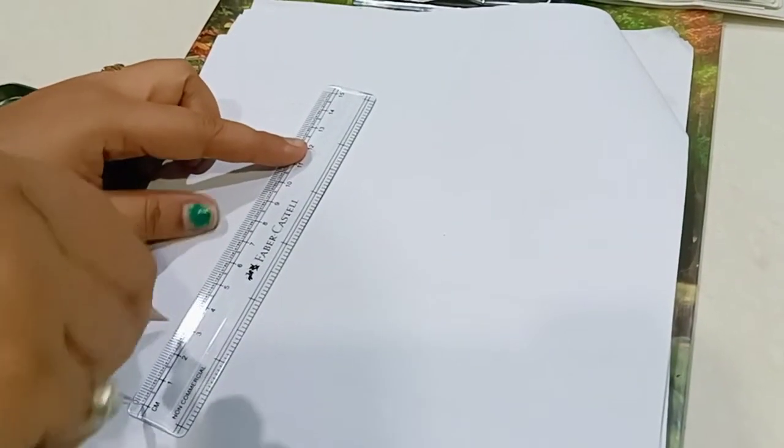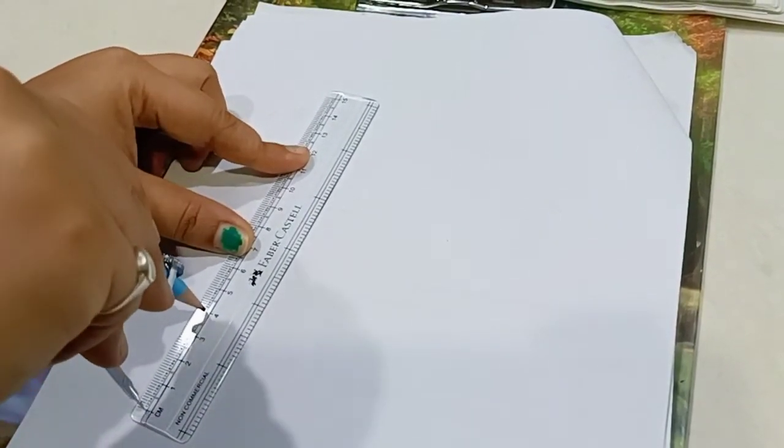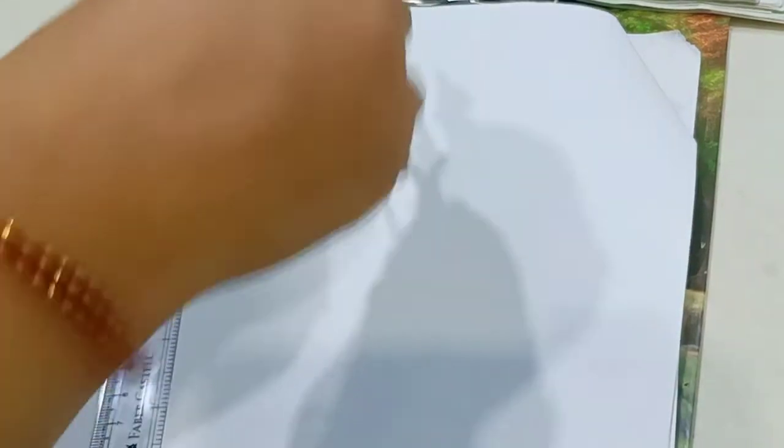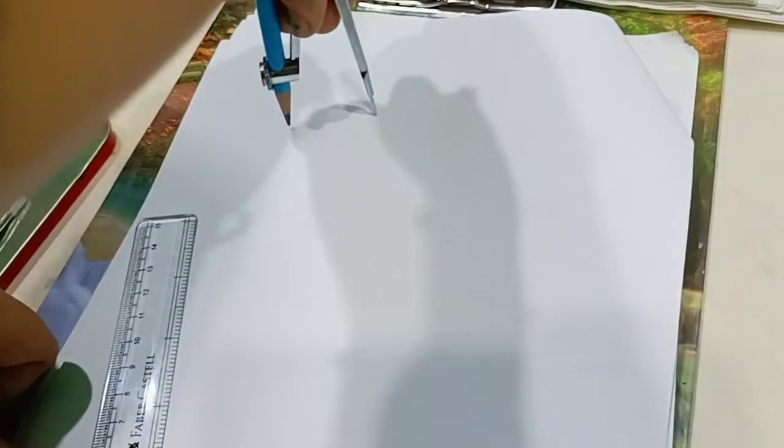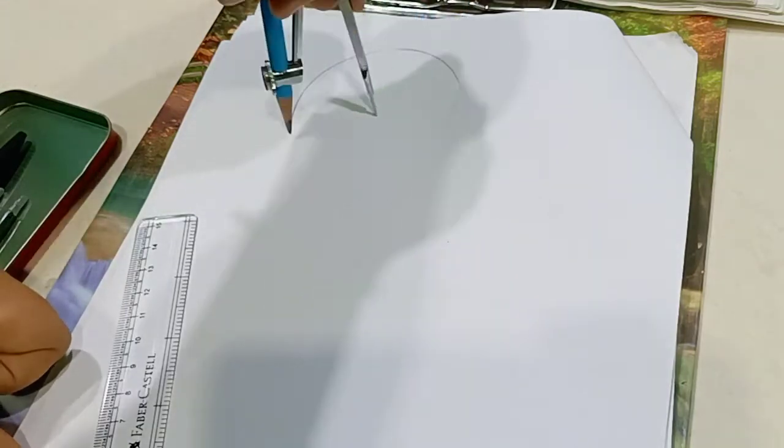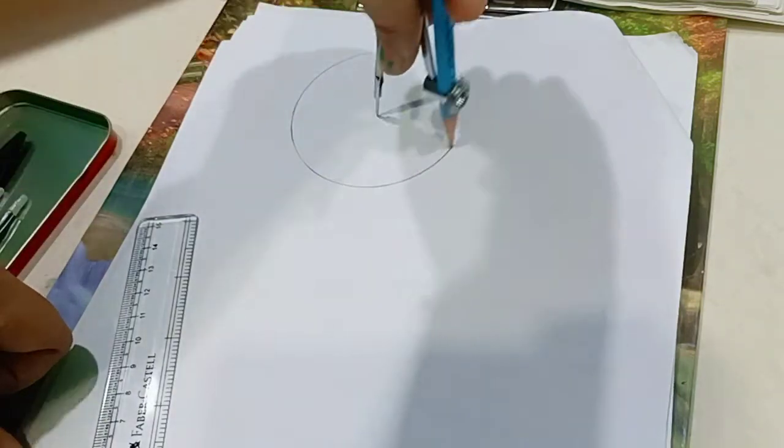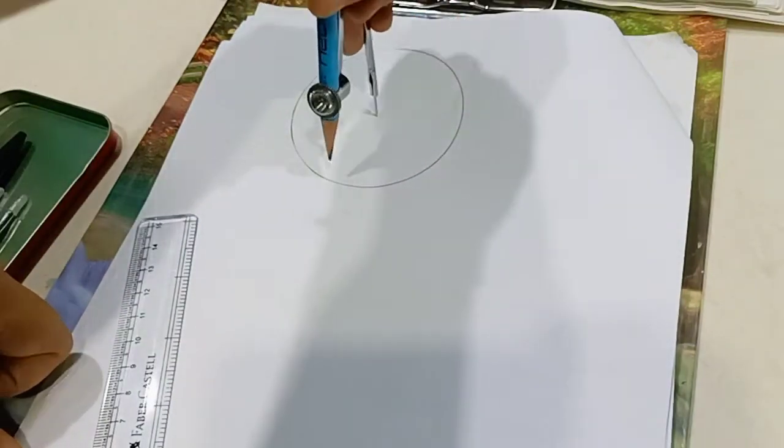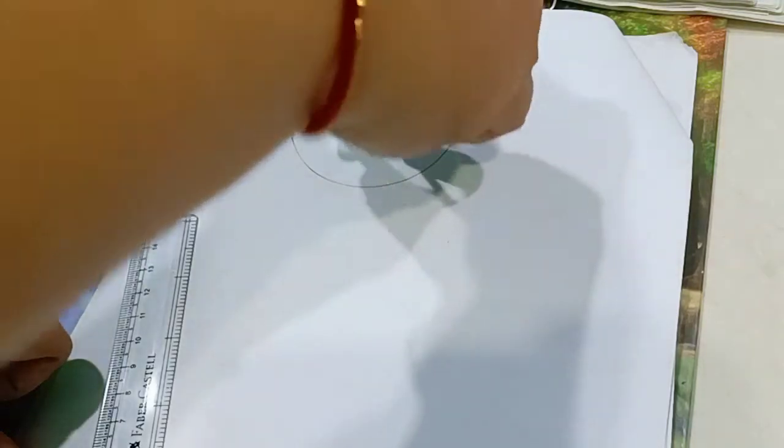First we draw the circle having radius 4 cm. Take the measurement of 4 cm from this ruler and draw the circle moving this pencil from this center. Now this is the circle having radius 4 cm and this is the center O.